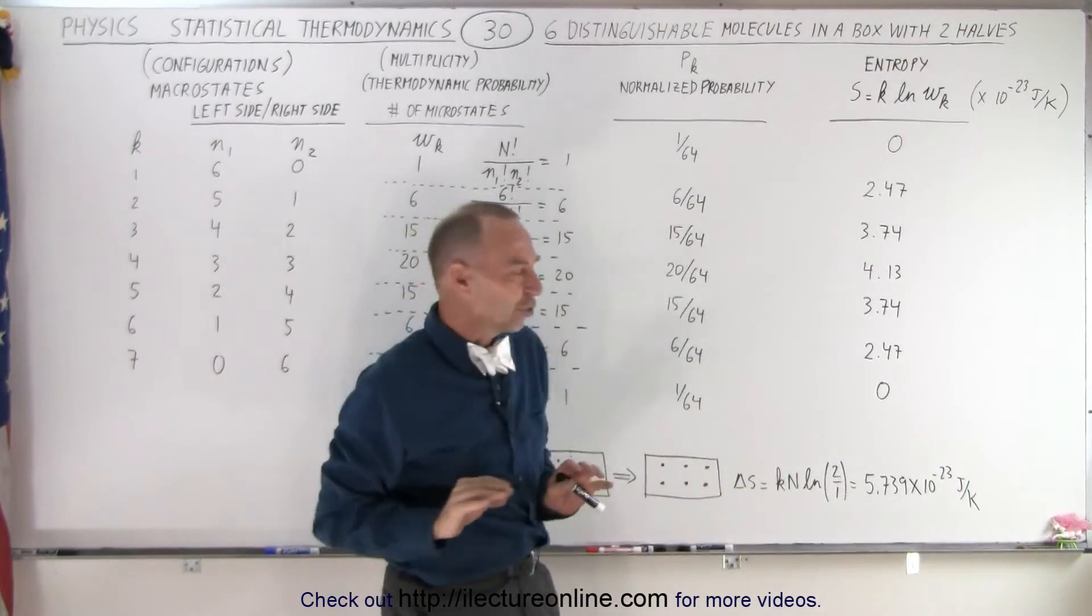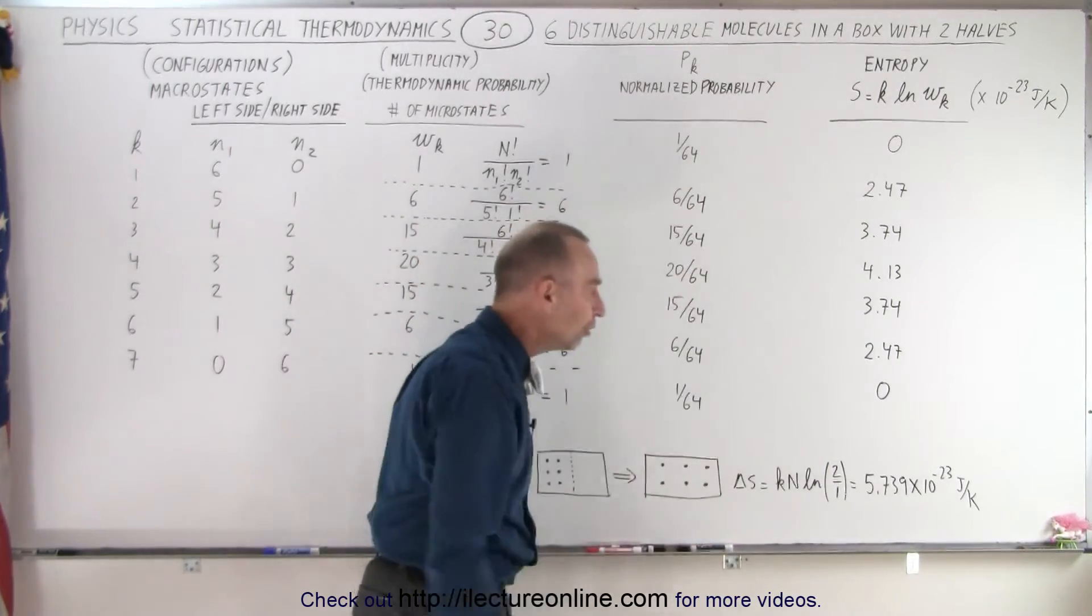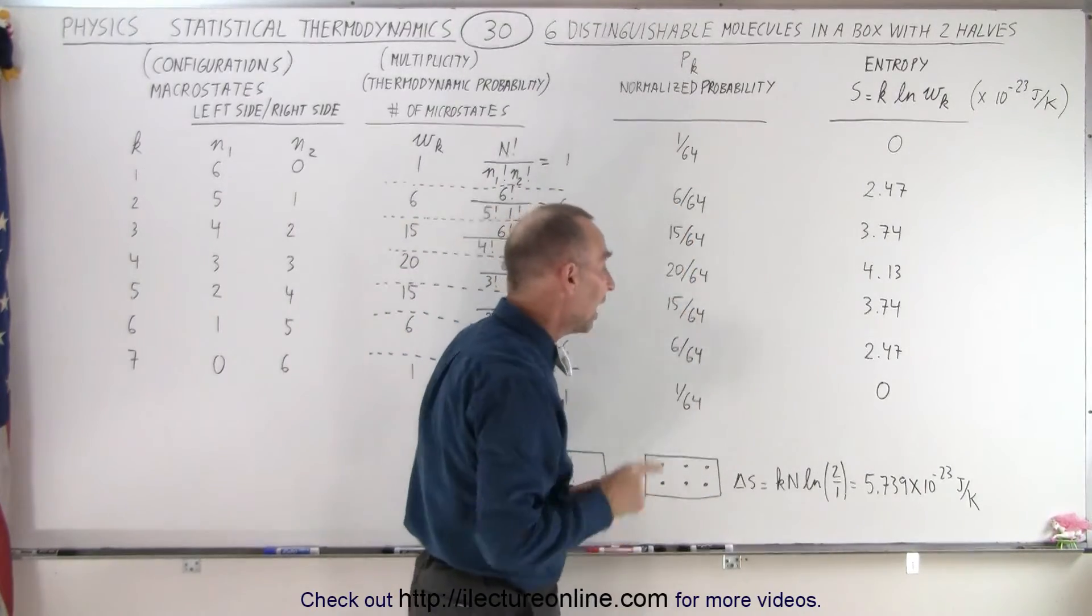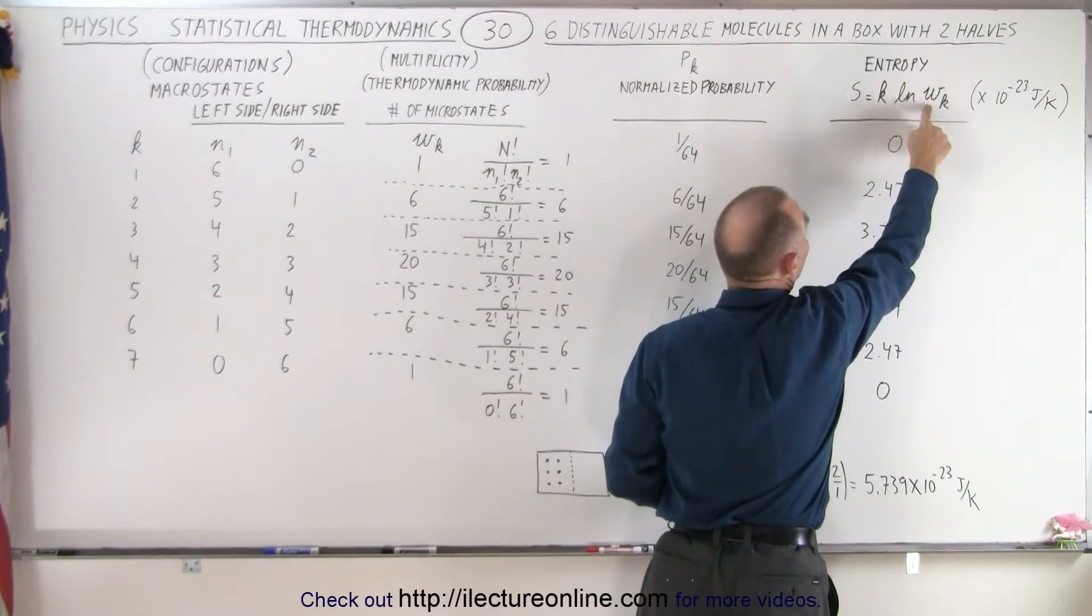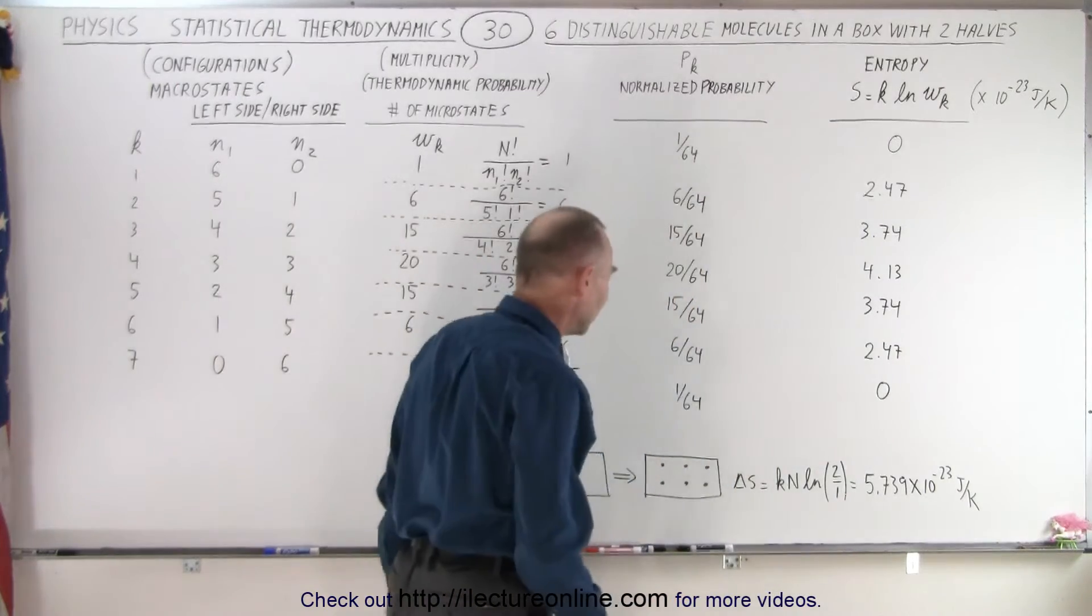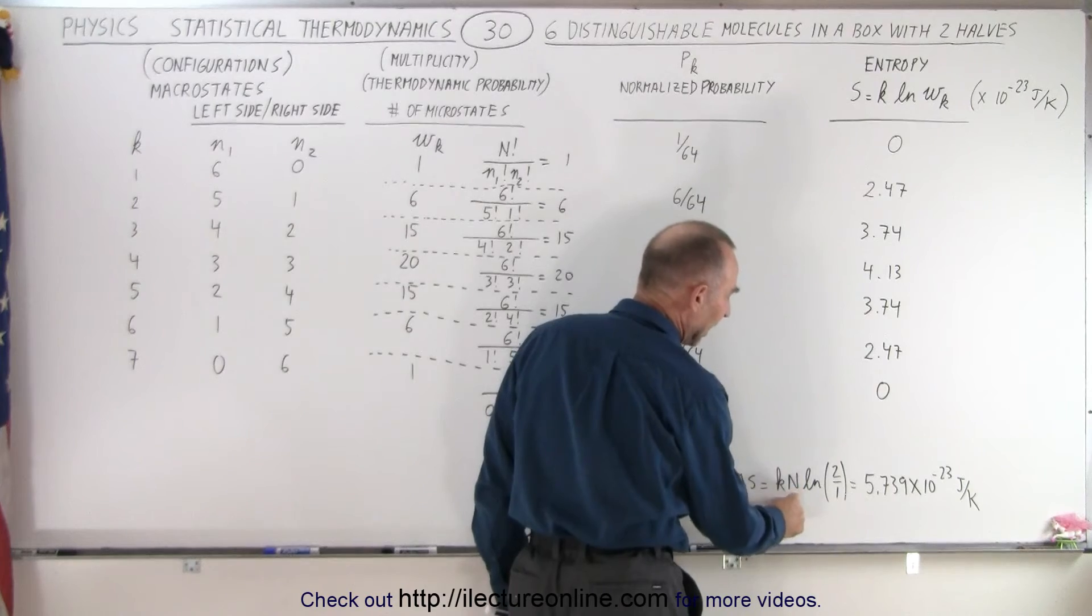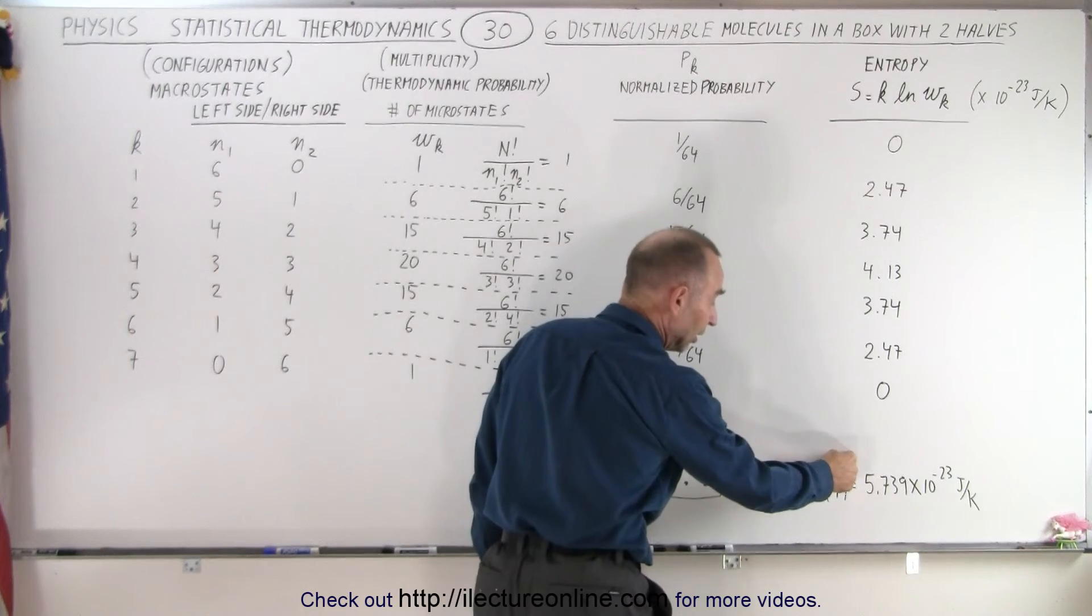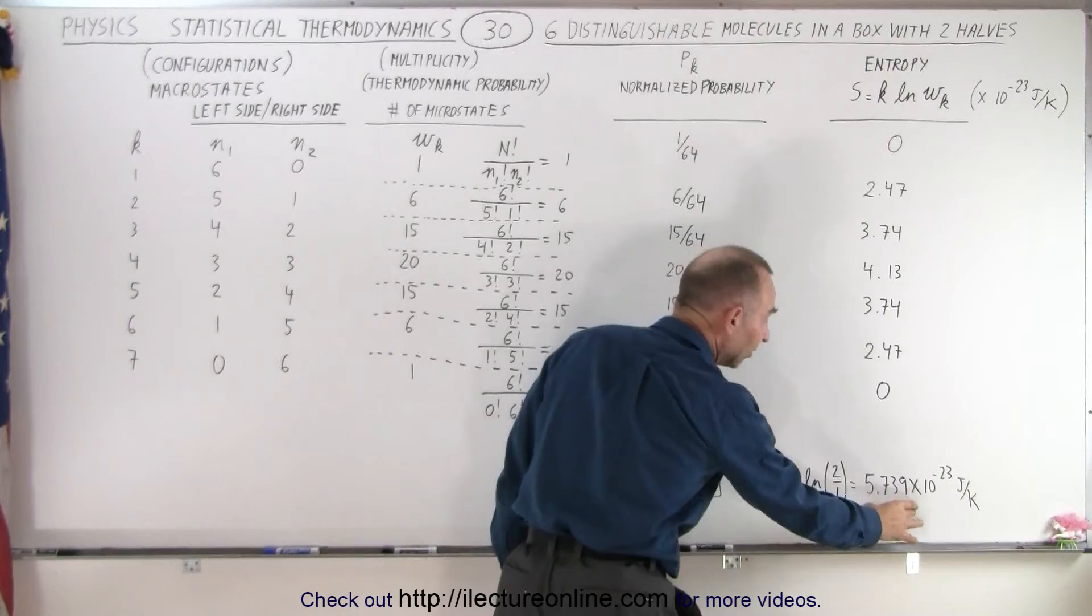But that's of course not the case at all. What we need to do instead is saying if we add together all of the microstates we can possibly have, 64 different microstates, and we replace W sub K by 64, and we take the natural log of that, well what happens is the natural log of 64 will give us the same thing as N times the natural log of 2. In other words, we bring the N over here, 2 to the 6th power is 64, the natural log of 64 times K will give you this.